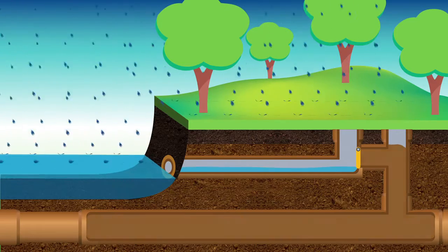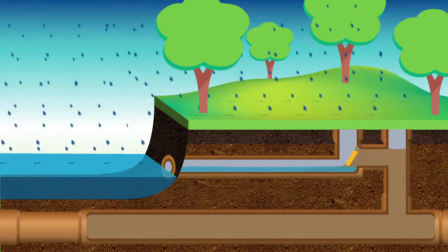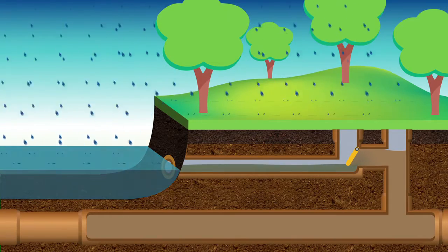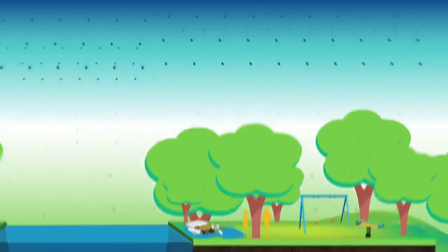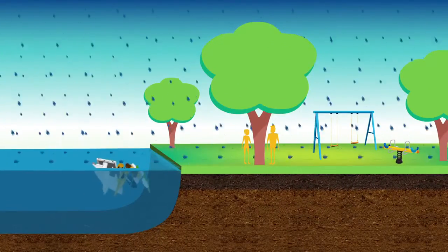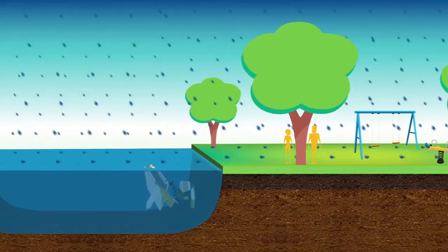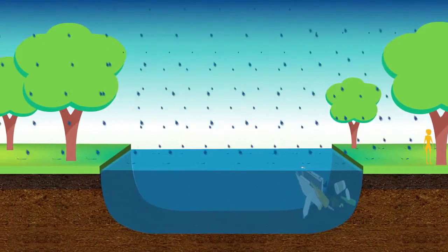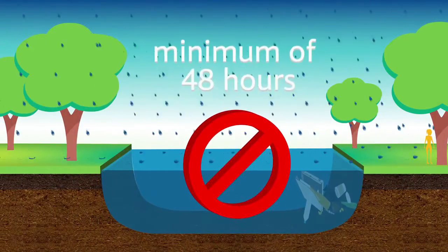Once, as the sewage in the pipes is diluted by the rain, and twice, as it's diluted by the river water. And as this extra rainwater contains contaminants from riverbanks and roads, such as litter and other pollutants, it's recommended that people avoid all contact for a minimum of 48 hours.